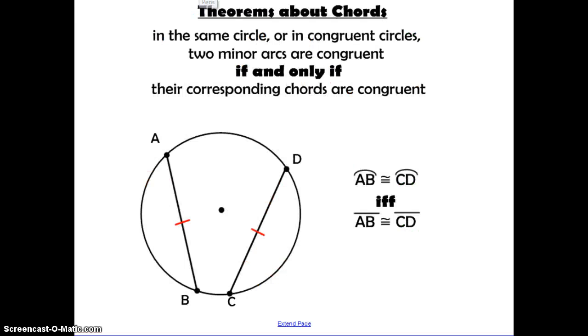Next, we want to talk about some theorems regarding chords. In the same circle, or in two congruent circles, two minor arcs are congruent if and only if their corresponding chords are congruent. So what that means here is that we have this chord AB, and if that's congruent to chord CD, that means their respective arcs, arc CD and arc AB, are also going to be congruent.